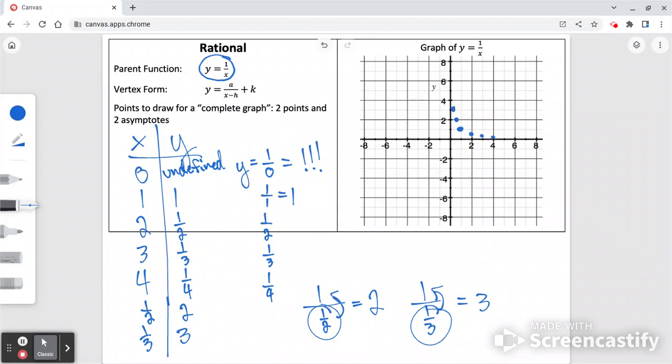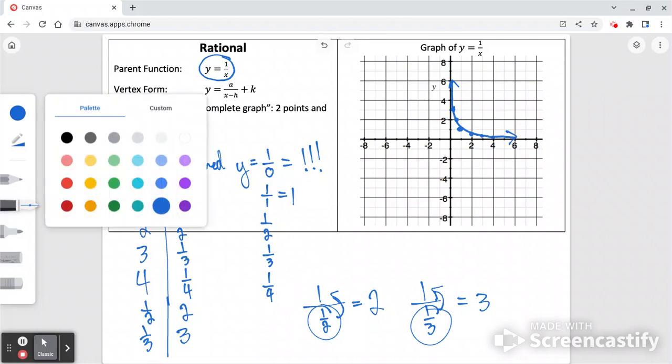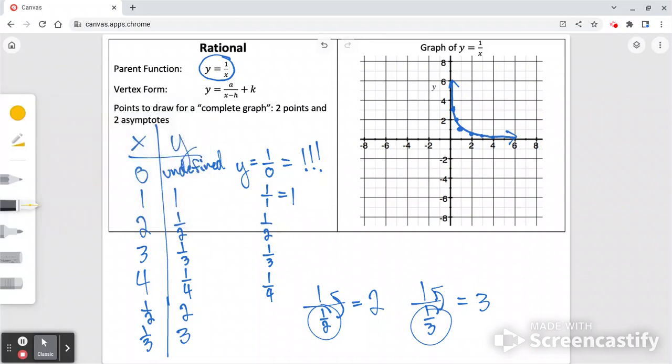We can see it's forming this curve where it's getting really close to the y-axis, and it's getting really close to the x-axis. It's never actually going to touch 0 because you can't divide by 0, and therefore you also can't get an answer of 0.